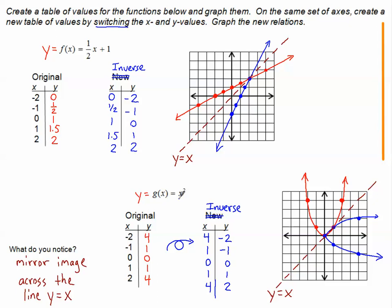One other thing to note about g(x): g(x) is x squared, and the inverse of squaring something is taking the square root. You can see the square root parent function as at least the top half of the blue curve. We also have the bottom half, which is the negative square root function — so plus or minus the square root of x is what we graphed in blue. We have the positive square root and the negative square root together.